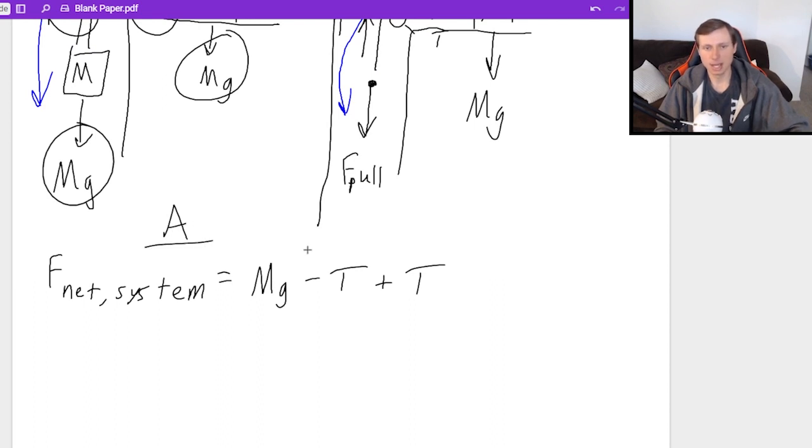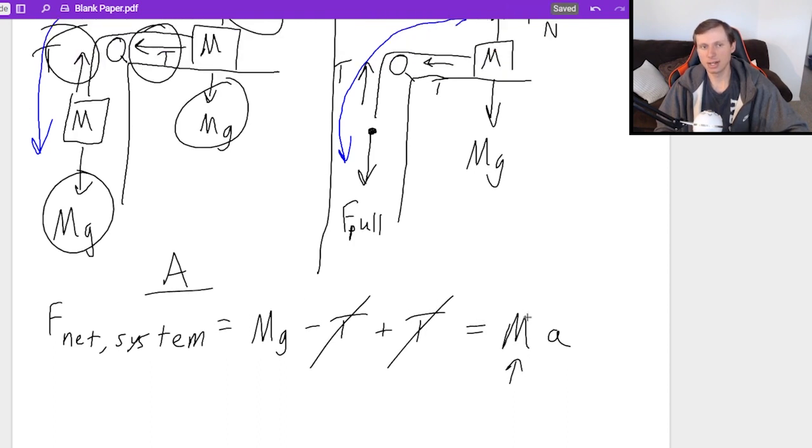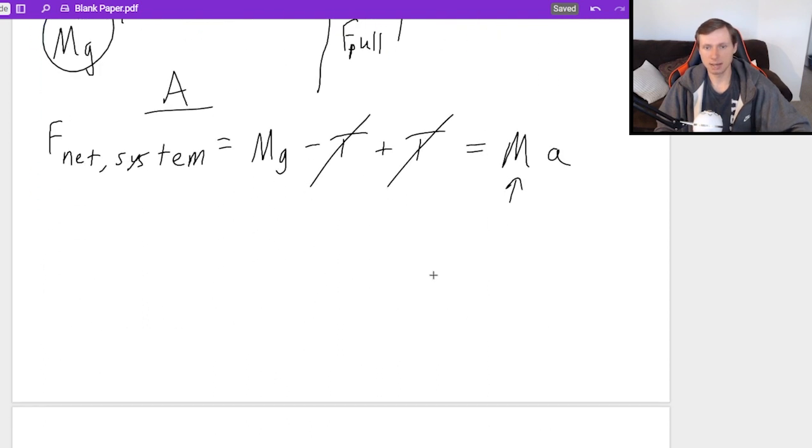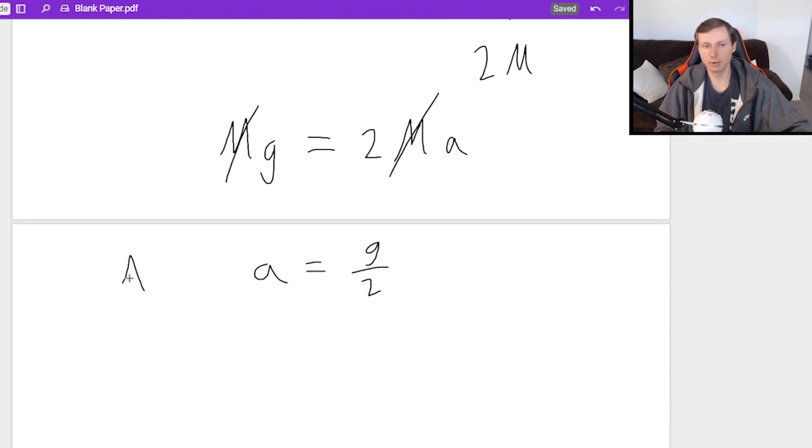And after I plug these in, I set it equal to the mass times the acceleration. Now these tension T's cancel. This mass right there is all the masses combined, which is M plus M. So that's 2M. So in other words, M times G will end up equaling 2MA. Looks like the masses cancel. And I get an acceleration of G over 2. That's it for scenario A. It's going to be G over 2 is my acceleration.